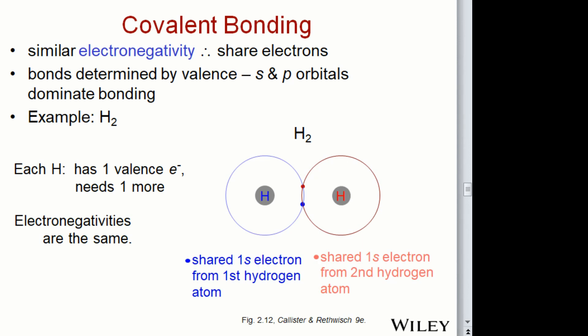Now let's go into covalent bonding. The difference is that in covalent bonding you have a sharing of electrons, compared to ionic bonding where they were giving or taking electrons. Covalent bonding typically occurs where you have similar electronegativities — there's no preference for giving or taking, so they tend to just share. The bonds are determined by the valence, and the s and p orbitals dominate. A very simple example is hydrogen gas, H₂ — each hydrogen has one valence electron and needs one more to satisfy its energy state.